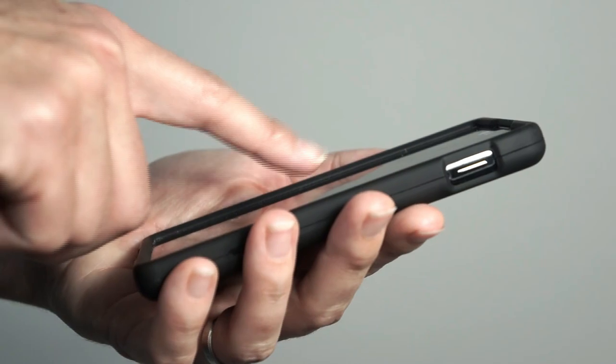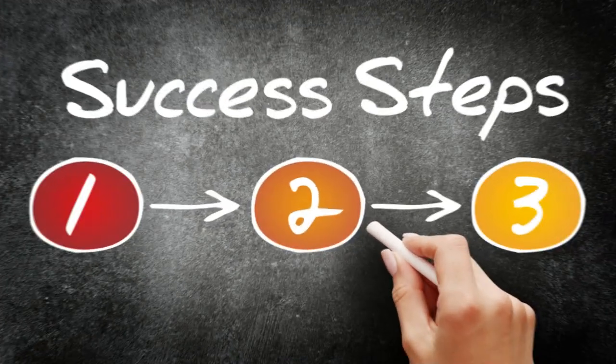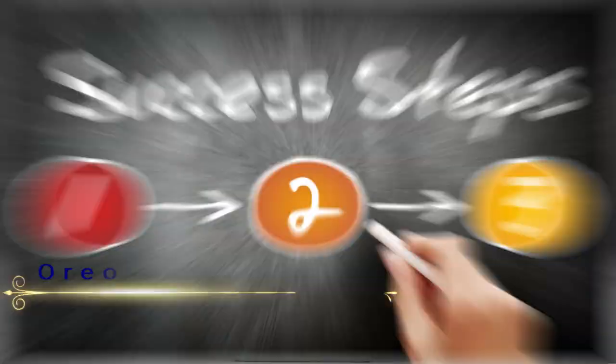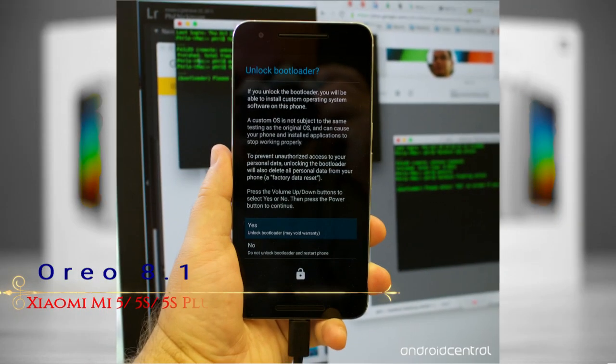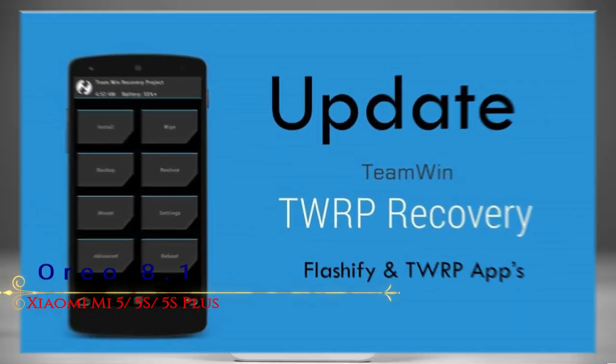Before installing this ROM, we need to enable three steps: enable developer option, unlock bootloader, and the third one, install TWRP.